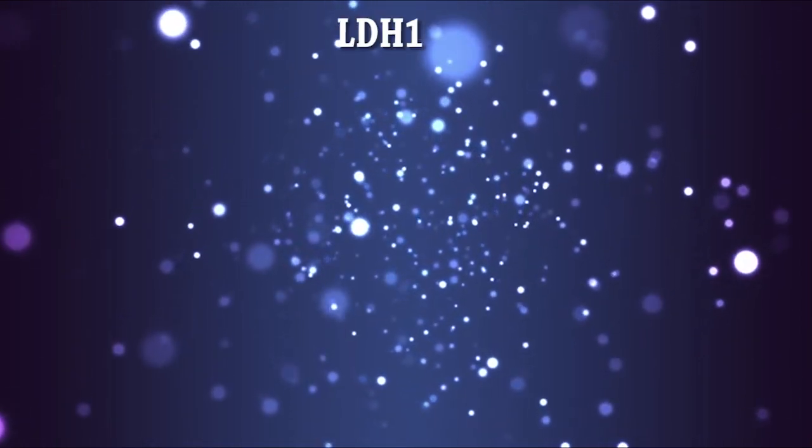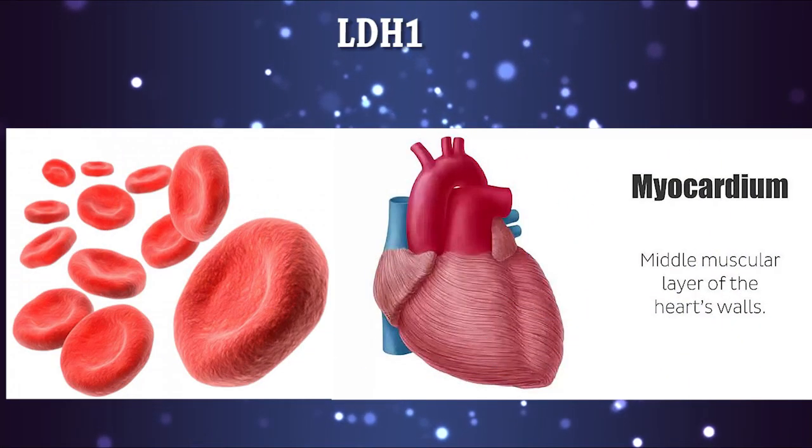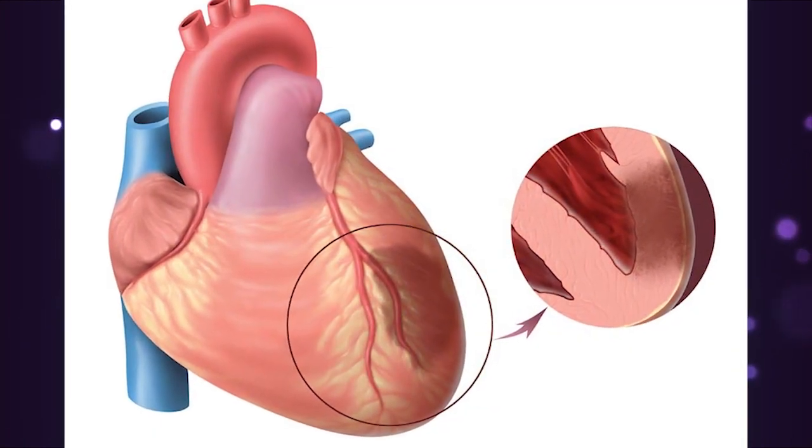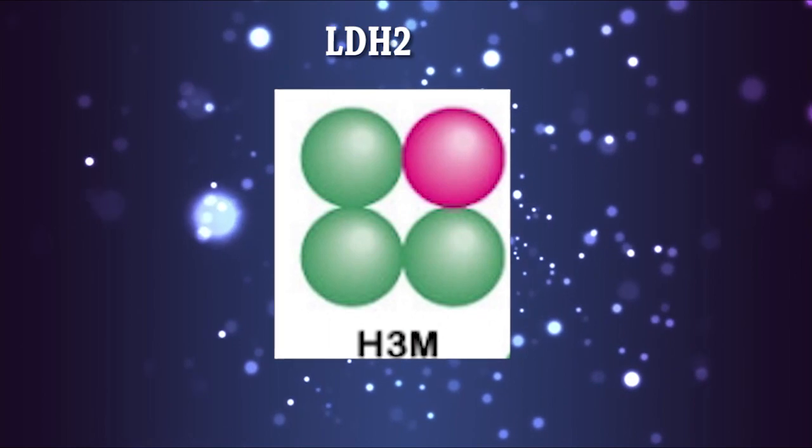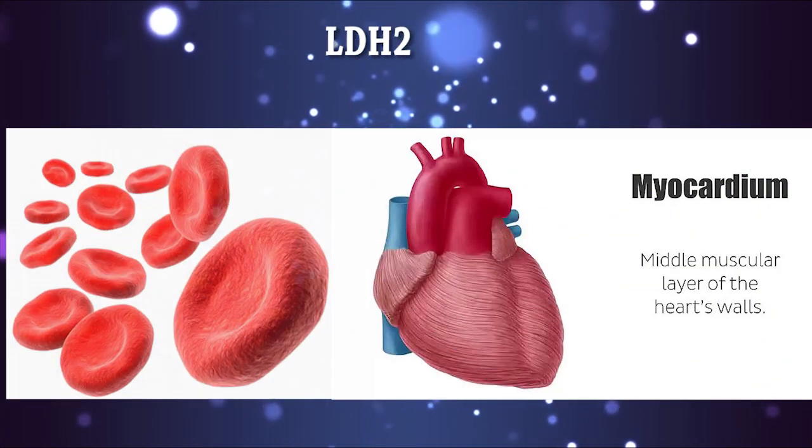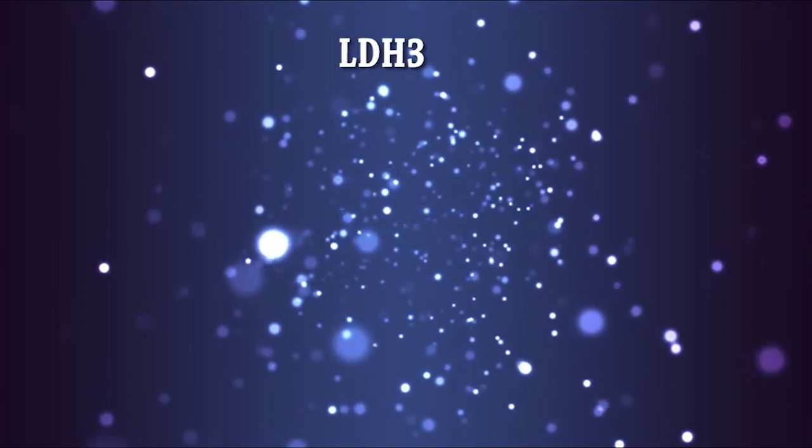LDH 1 composition is 4 H chains and is present in myocardium and RBC, also elevated in myocardial infarction conditions. LDH 2 composition is 3 H chains and 1 M chain, present in myocardium and RBC.